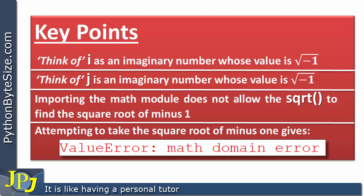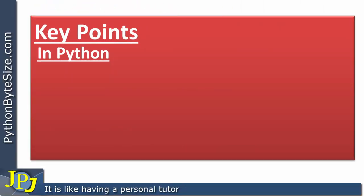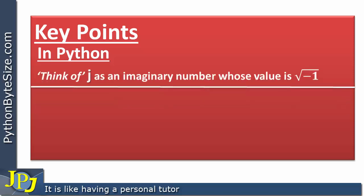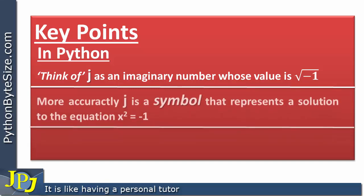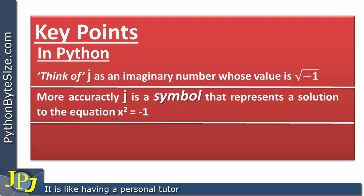This is not to say that we cannot deal with the square root of minus one, as outlined in the previous video and as we're going to look at in upcoming videos. From the perspective of the Python programming language, we can think of j as an imaginary number whose value is the square root of minus one. More accurately, j is a symbol that represents a solution to the equation x squared equals minus one, and if we take the square root of both sides we find x equals the square root of minus one.